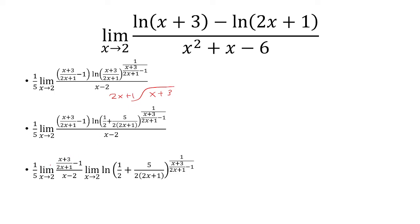Now I'm going to separate this into two separate limits. The first limit will be basically this right here, the x plus 3 over 2x plus 1 minus 1 over x minus 2. And the second limit will be the rest.